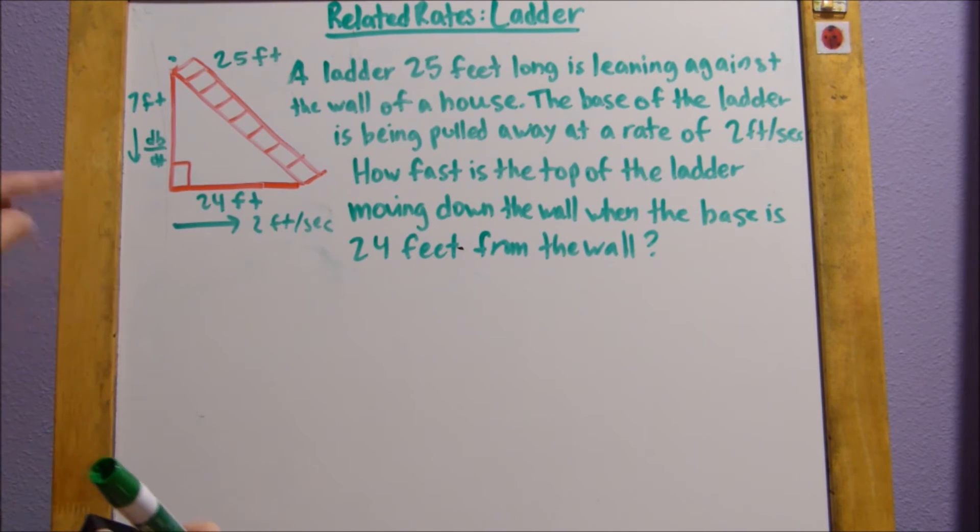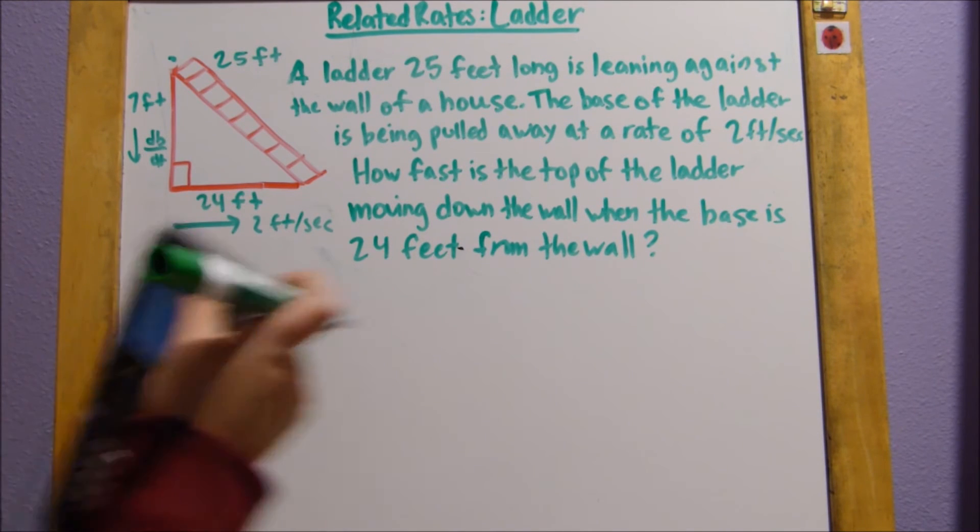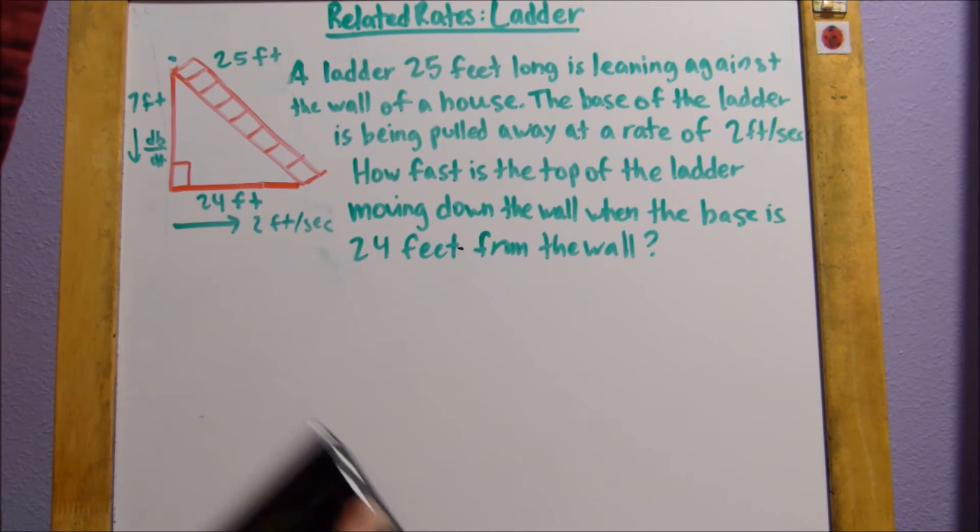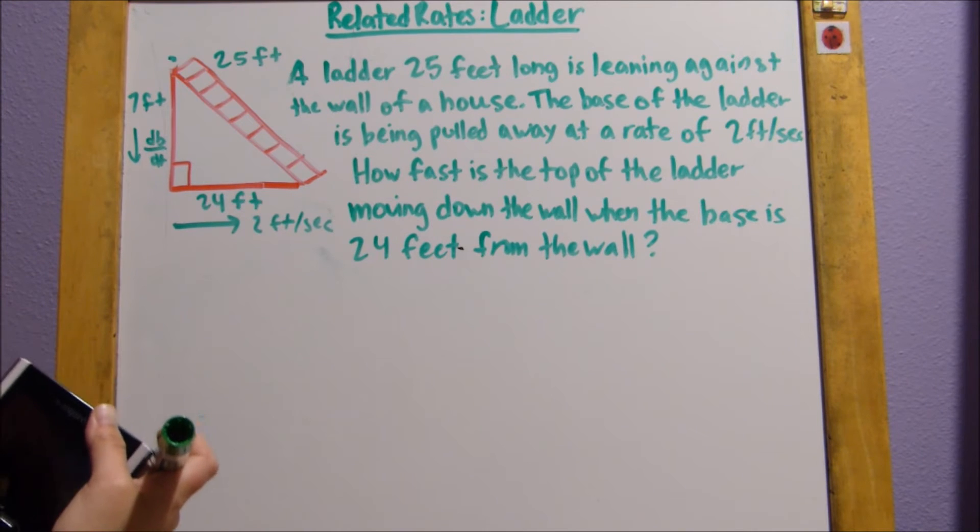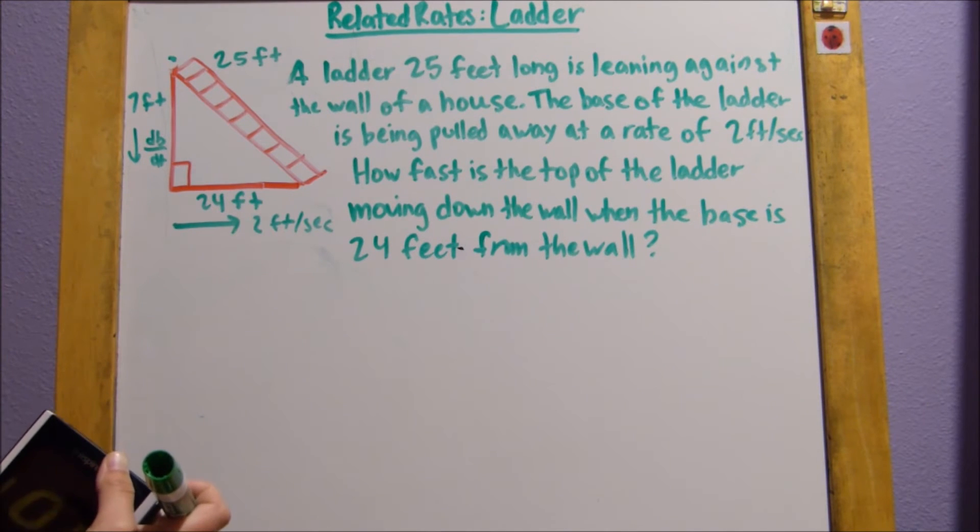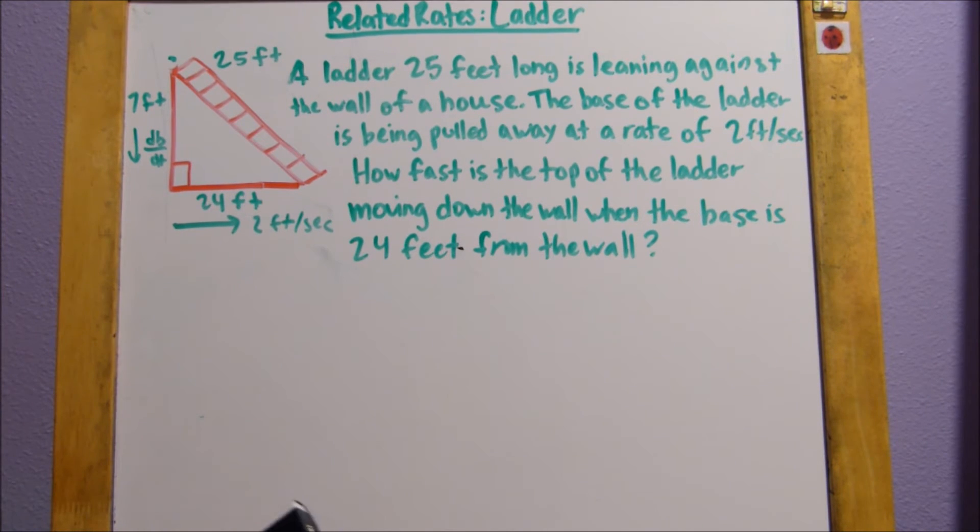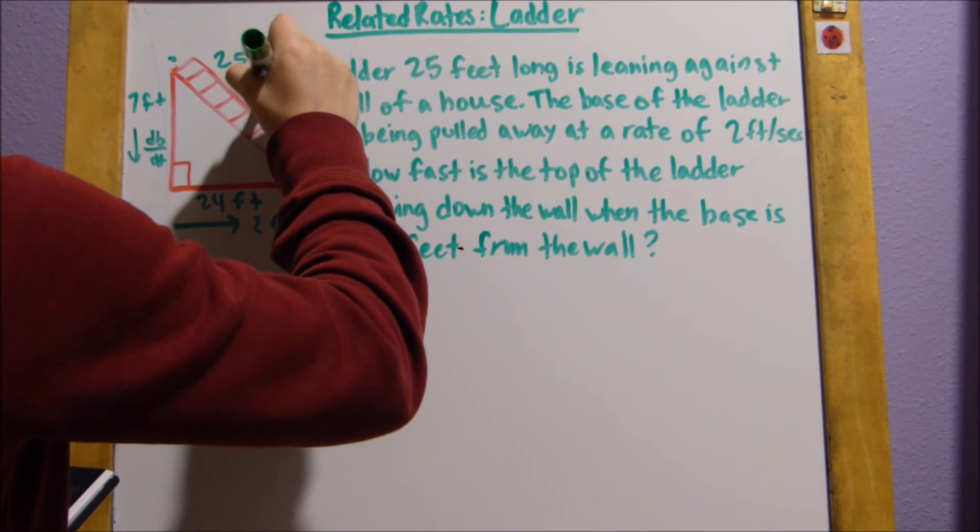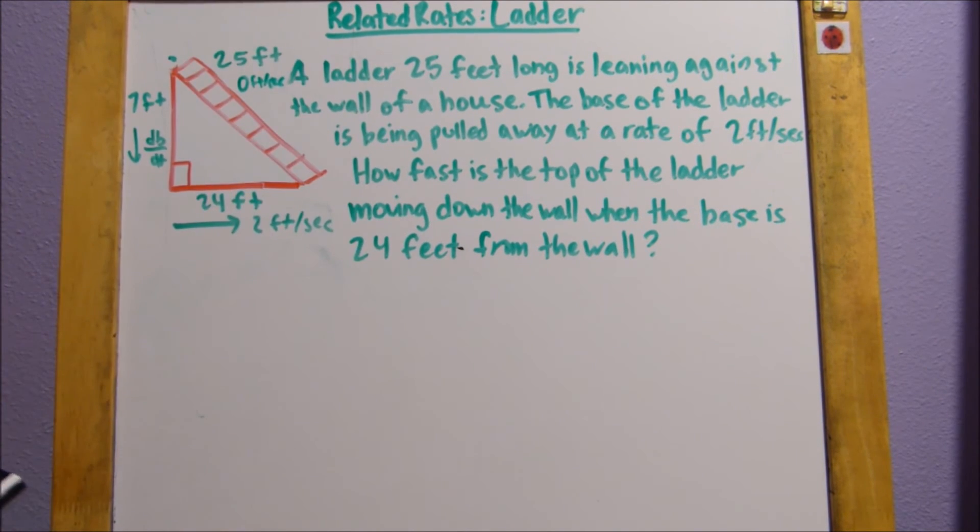So, I know that this rate is 0 feet per second. How do I know that? I know that because this ladder is not changing sizes. If it were getting longer, it would have a positive rate. If it was getting shorter, it would have a negative rate. But this ladder, it's not changing how long it is. It's just sliding down a wall. So, our rate is 0 feet per second.